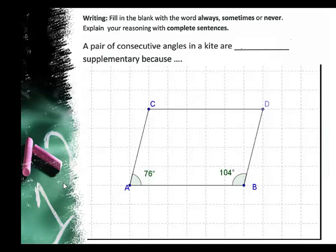Now we're looking at the writing prompt. It says a pair of consecutive angles in a kite are blank supplementary because.